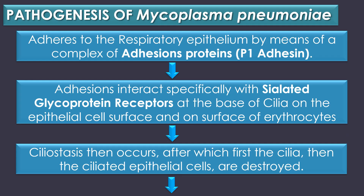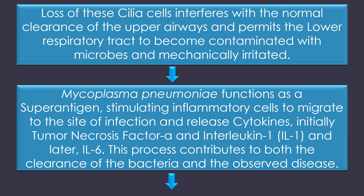Pathogenesis: Mycoplasma pneumoniae is an extracellular pathogen that adheres to the respiratory epithelium by means of a complex of adhesion proteins called P1 adhesin. The adhesin interacts specifically with sialylated glycoprotein receptors at the base of cilia on the epithelial cell surface and on the surface of erythrocytes. Ciliostasis then occurs, after which first the cilia and then the ciliated epithelial cells are destroyed. The loss of these ciliated cells interferes with the normal clearance of the upper airways and permits the lower respiratory tract to become contaminated with microbes and mechanically irritated.